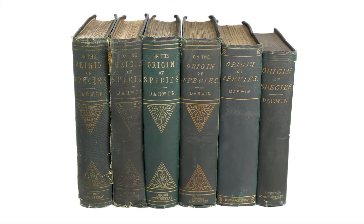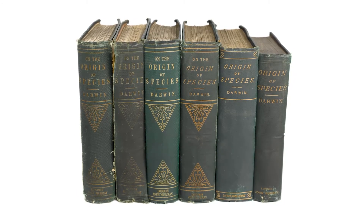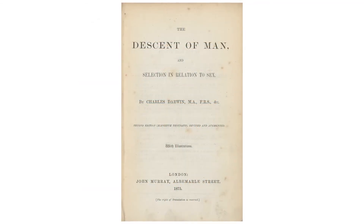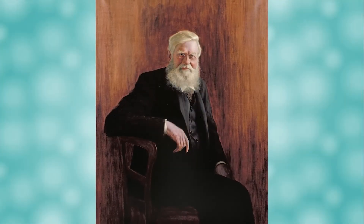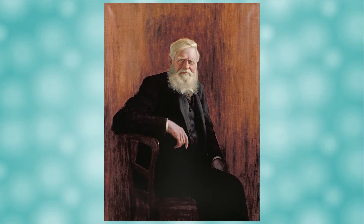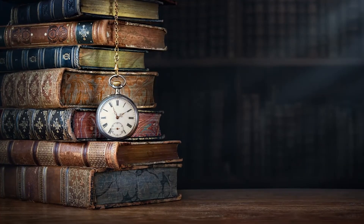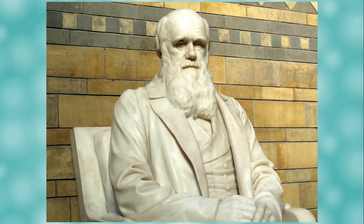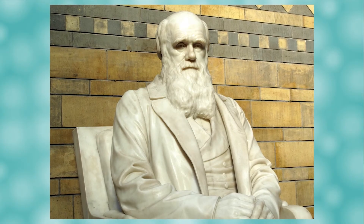He finally did publish his ideas in 1859 with his groundbreaking book On the Origin of Species, followed later by Descent of Man. Other scientists were beginning to come to the same conclusions after making similar observations in different parts of the world, and Darwin finally overcame his fear of publishing simply so that someone else wouldn't beat him to it. These works would spark a revolution and make Darwin one of the most well-known scientists in history.